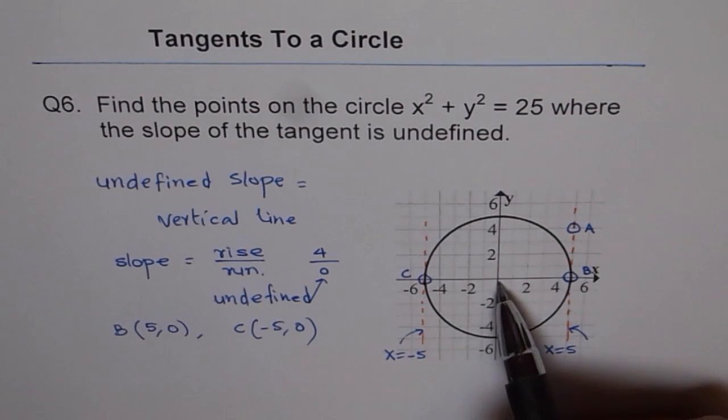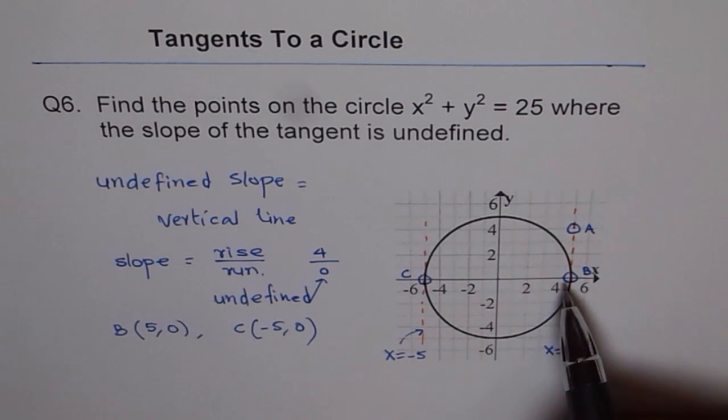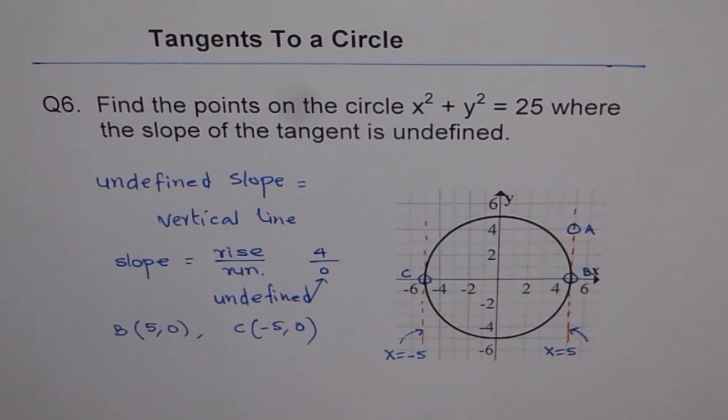So whenever center is at origin, the x-intercepts will be the points where the slope of the tangent is undefined. So a lot of things to learn and get from this picture.